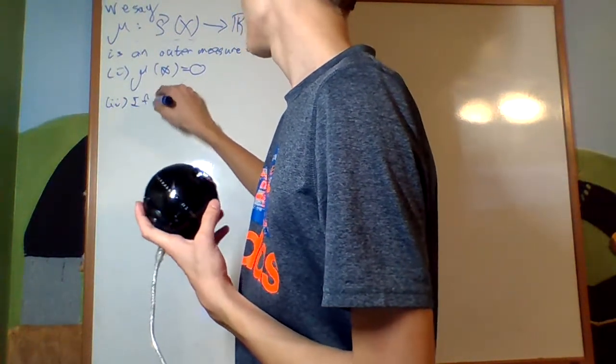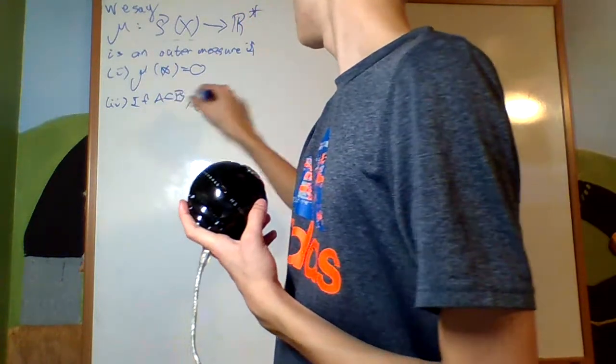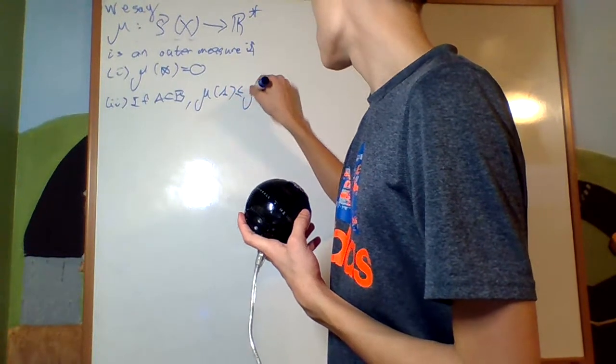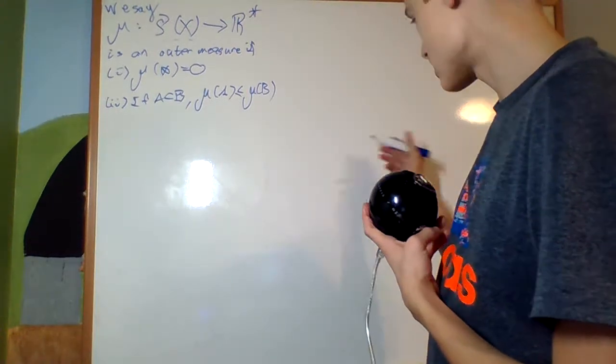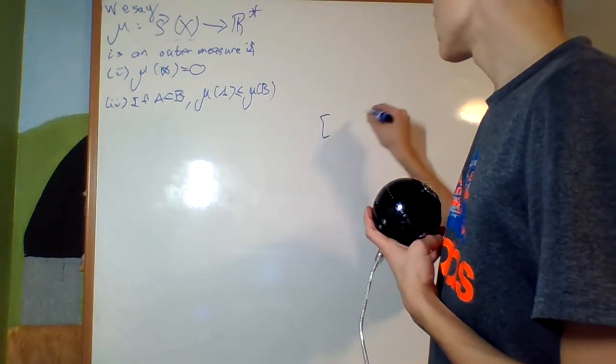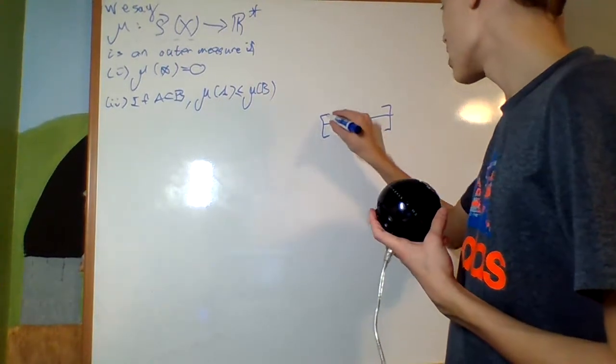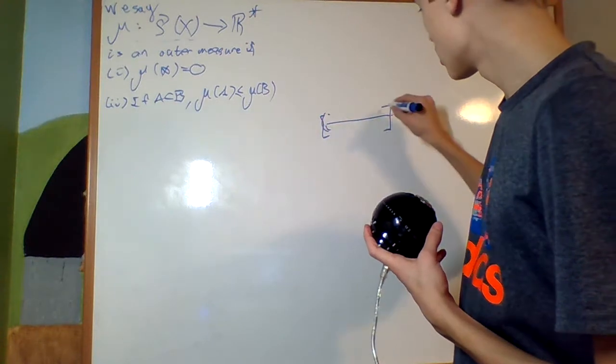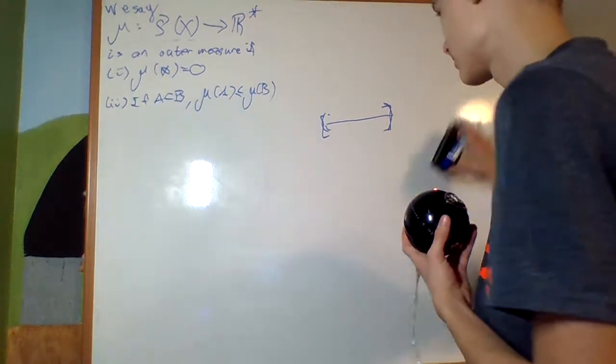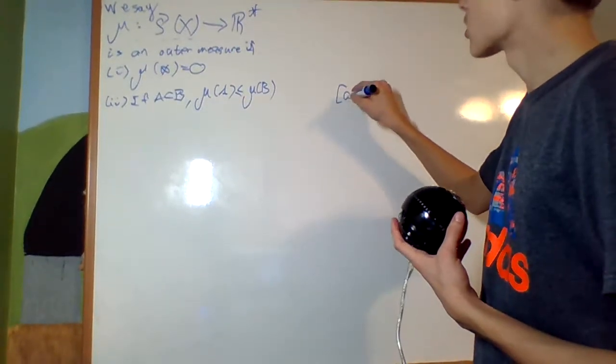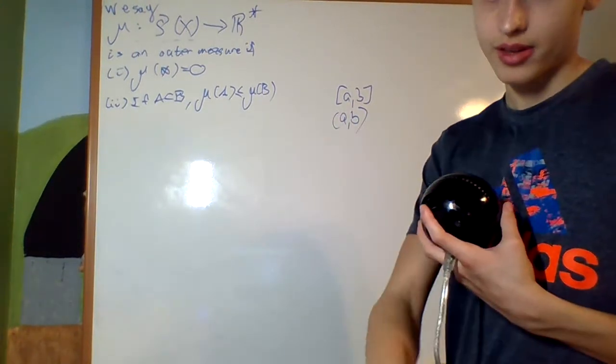Two. If A is a subset of B, mu of A is less than or equal to mu of B. The reason why it's less than or equal to and not less than is because I could take the closed set on R and the open set on R. Those should have the same measure, but one's a subset of the other.